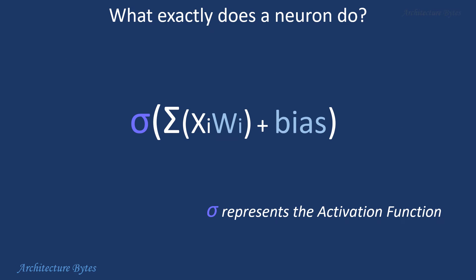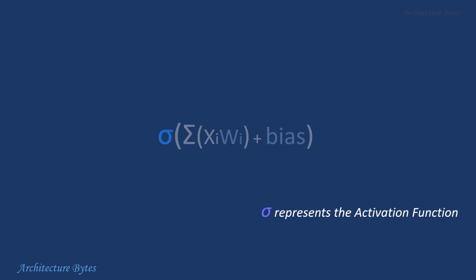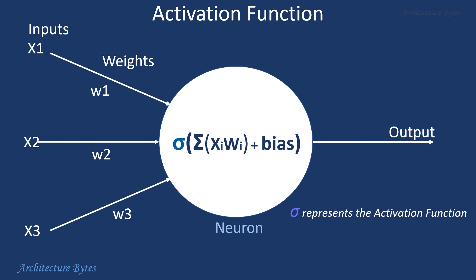Next obvious question is how are weights, bias and activation function chosen? Both weights and bias are parameters that will be tuned during training so that neural network gives us accurate results. The primary role of the activation function is to transform the value given to it in a suitable manner for the next layer or the final output. It could be as simple as converting negative values to 0 and positive values to 1.